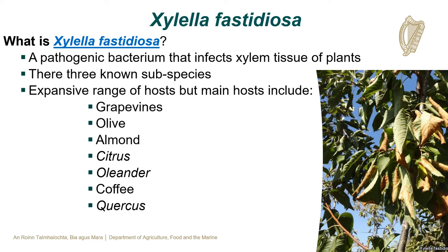What is Xylella fastidiosa? Xylella fastidiosa is a pathogenic bacteria that infects and colonises the xylem of host plants. There are three or more known subspecies, including Xylella fastidiosa fastidiosa, Xylella fastidiosa multiplex and Xylella fastidiosa pauca. Xylella fastidiosa has an expansive range of host plants, but the main hosts include grapevines, olives, almonds, citrus, oleander, coffee and Quercus species.